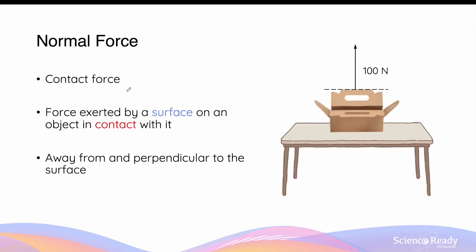The first type of contact force we'll discuss is the normal force. The normal force is the force exerted by a surface on an object that is in contact with it. This is why it's a contact force — it requires an object to be directly in contact with the surface. As a vector, the normal force is always directed away from the surface and is perpendicular to the surface, hence why this is known as a normal force — 'normal' meaning a perpendicular line drawn from the surface. In this example, the box is in contact with the table and is acted upon by a 100N normal force directed upwards, perpendicular to the surface of the table.